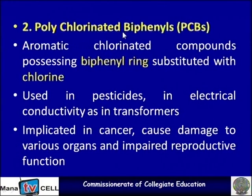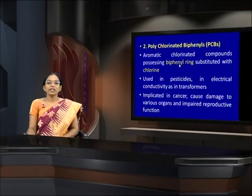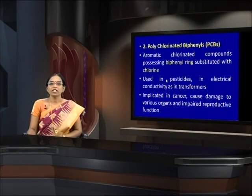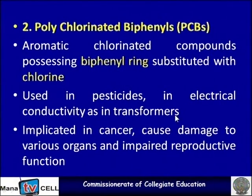Polychlorinated biphenyls (PCBs) have many chlorine atoms attached to two phenyl group aromatic compounds. These are aromatic chlorinated compounds possessing a biphenyl ring substituted with chlorine, used in pesticides and in electrical applications such as transformers. PCBs are implicated in cancer, causing damage to various organs and impairing reproductive function.